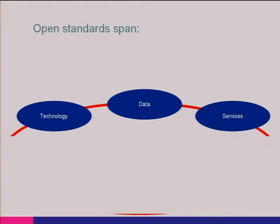We see open standards spanning three areas: technology, data, and services. There are technology standards to efficiently manage data — standards for databases, storage, communications, and servers, such as SQL, which is both an ISO and ANSI standard. We have data standards to interoperate with geospatial data; in Europe there's the European INSPIRE Directive, and in the United States the Federal Geographic Data Committee. Then we have service standards to consume geospatial services, great examples being WMS and WFS — Web Feature Service and Web Map Service — from OGC.